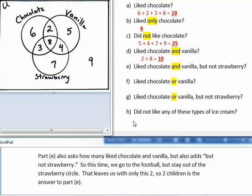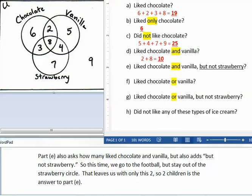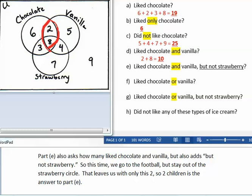Part E also asks how many liked chocolate and vanilla, but also adds, but not strawberry. So this time we do go to the football, but we stay out of the strawberry circle. That leaves us only with two, so two children is the answer to part E.